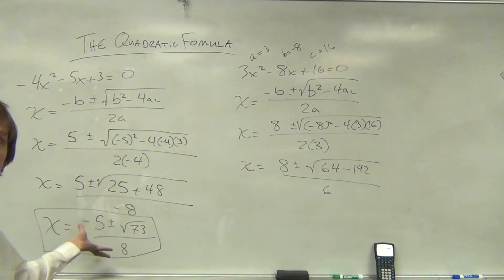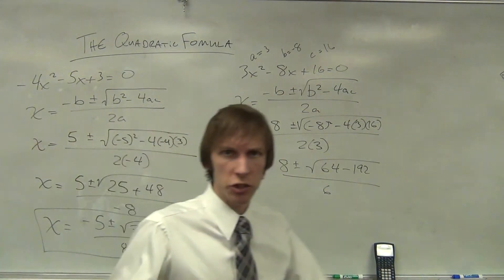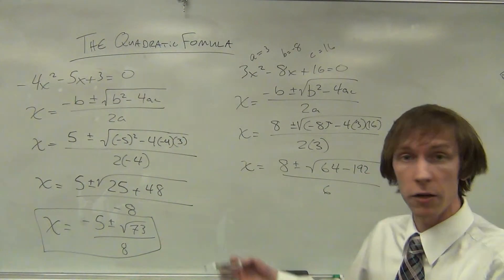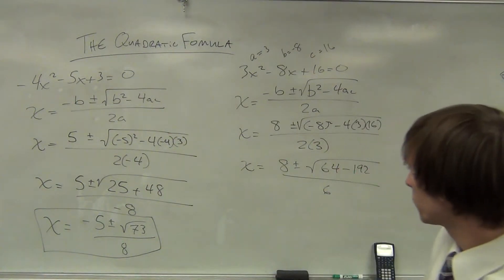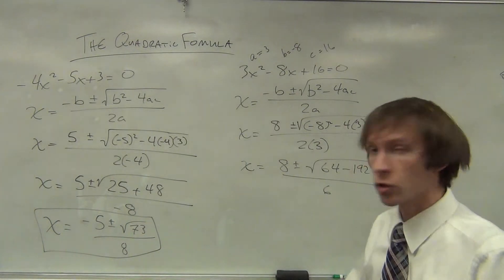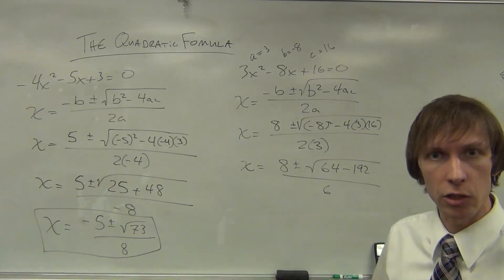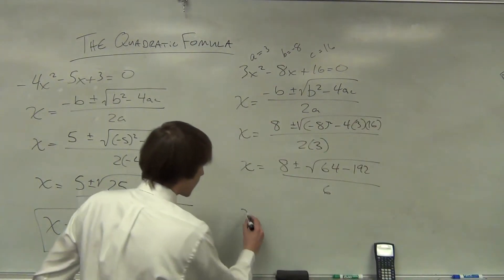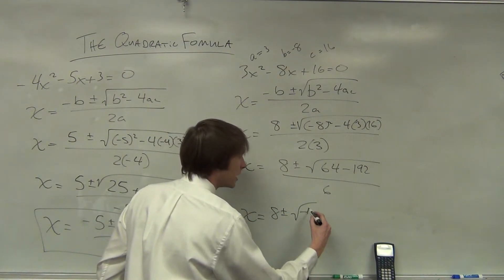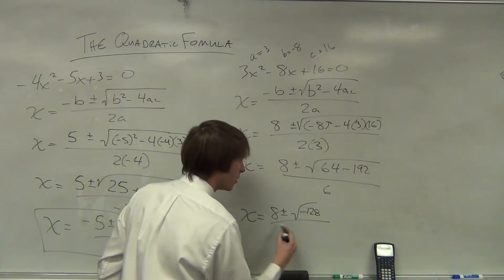So this is a real solution. This is a real number. I know it's irrational and it's probably very difficult to locate that on a number line, but we could find decimal approximations for this. Here we're going to end up with an imaginary number. It's not a big deal. We can handle it.